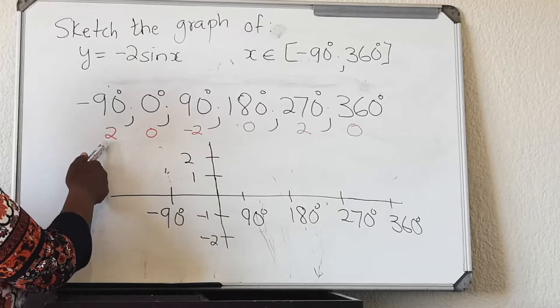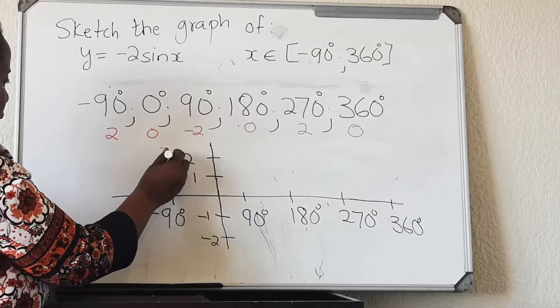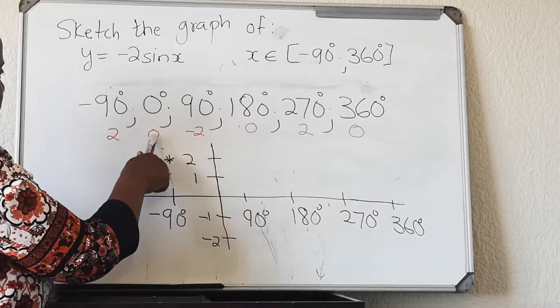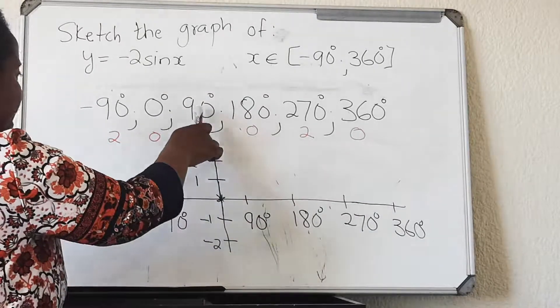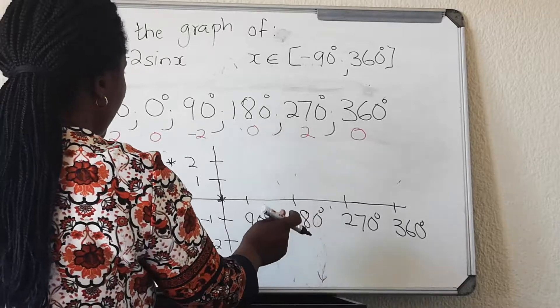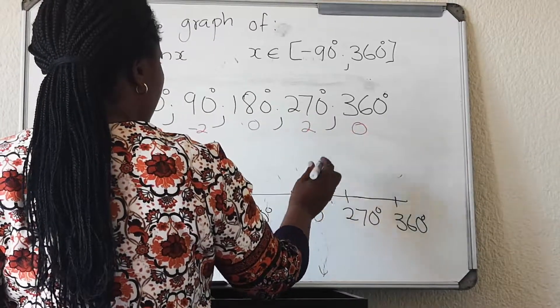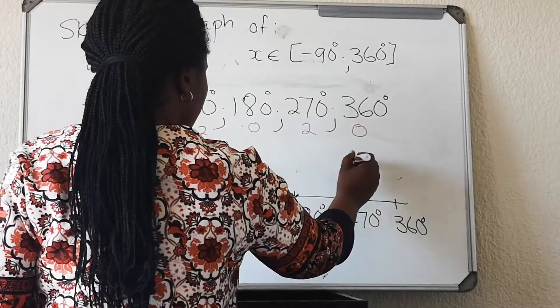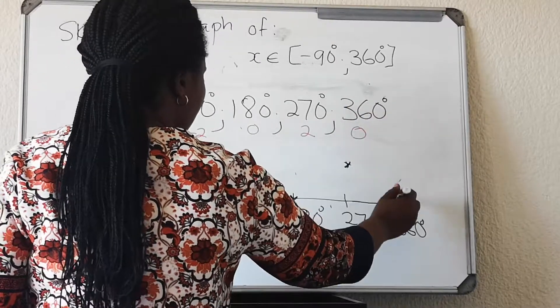Minus 90 and 2. 0 and 0. 90 and minus 2. Here. 180 and 0. 270 and minus 2. There. And then 360 and 0.